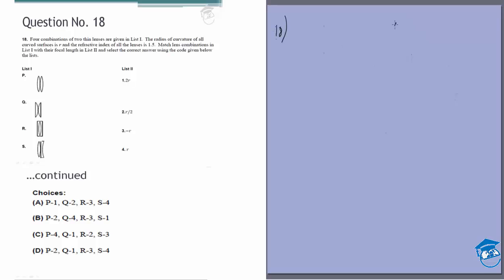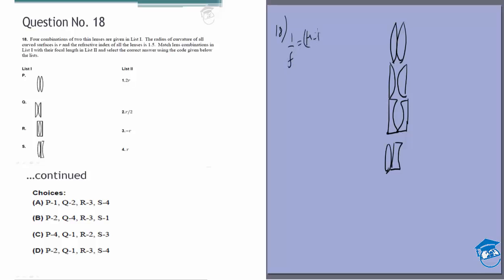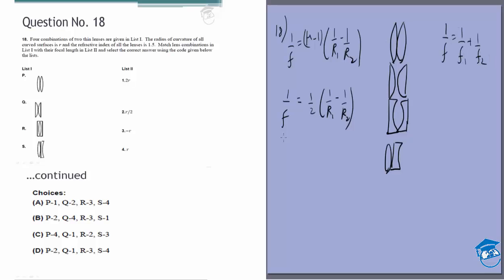Let's look at question 18. We are given four lens combinations and want to find the focal length of each. The formula we need is 1/f = (μ − 1)(1/R1 − 1/R2). Here μ = 1.5, so μ − 1 = 1/2. The key in this question is to use the proper signs for the radii of curvature. Once the signs are correct, find the focal length for each individual lens surface, then combine using 1/f = 1/f1 + 1/f2.